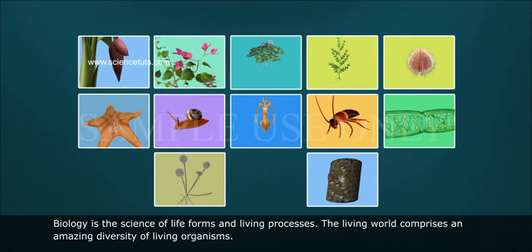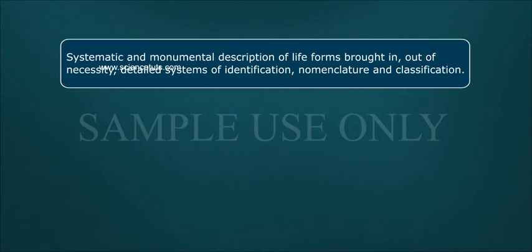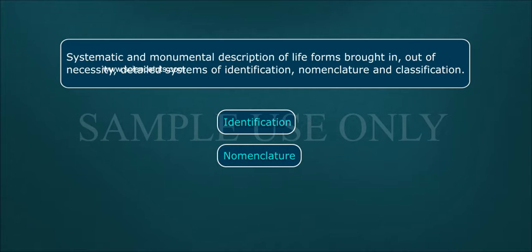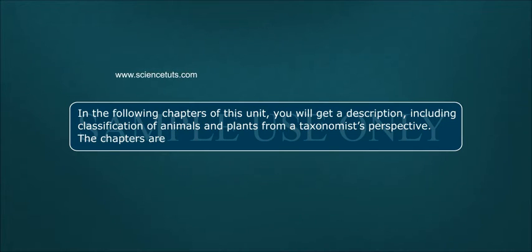The living world comprises an amazing diversity of living organisms. Systematic and monumental description of life forms brought in, out of necessity, detailed systems of identification, nomenclature and classification. In the following chapters of this unit, you will get a description including classification of animals and plants from a taxonomist's perspective.